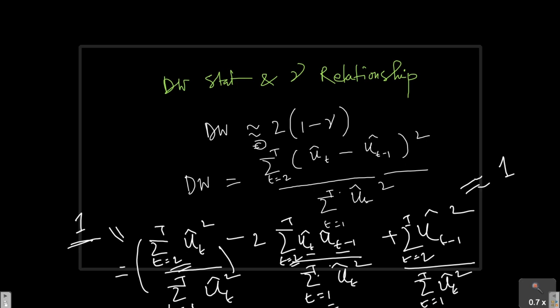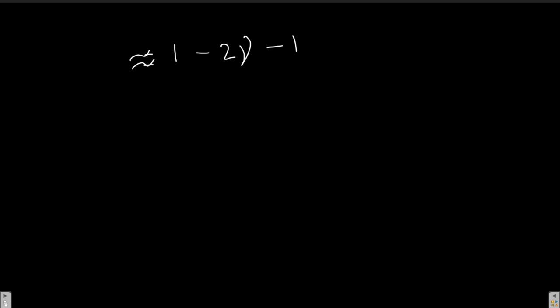So, that is why I write it approximately equal. So, this is approximately equal to essentially 2 minus 2 into gamma or essentially 2 into 1 minus gamma, right? This is essentially what we get from here.